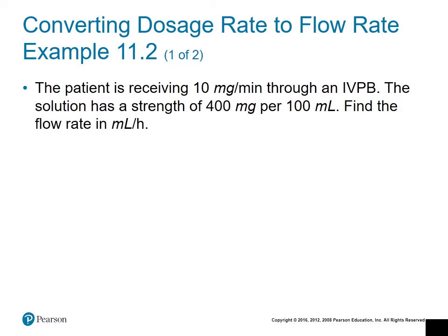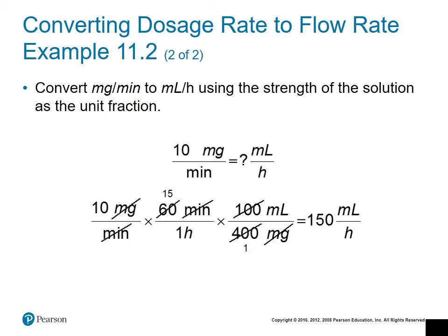Next example: this time we're converting the dosage rate to the flow rate. The patient is receiving 10 milligrams per minute — that's the dosage rate — through an IV piggyback. The solution has a strength of 400 milligrams per 100 milliliters. We want to find the flow rate in milliliters per hour, converting milligrams over minutes to milliliters per hour.